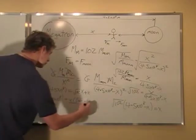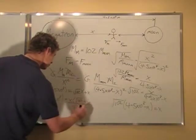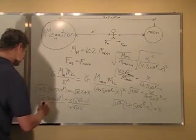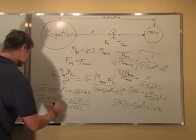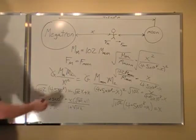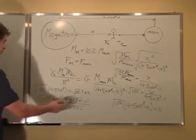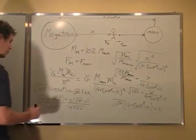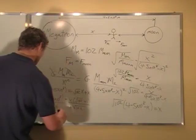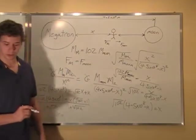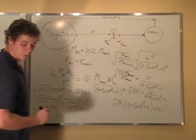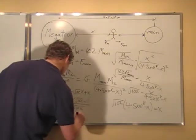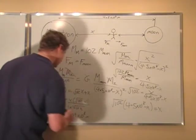And these are all just numbers, so now I just plug this in my calculator. This times this divided by 1 plus root 102. This is like 11 because it's just greater than 10. Which gives me an X equal to 4.09 times 10 to the 8 meters.